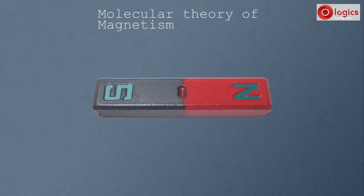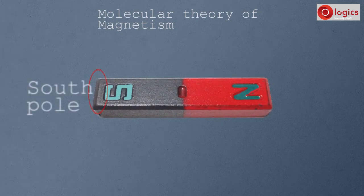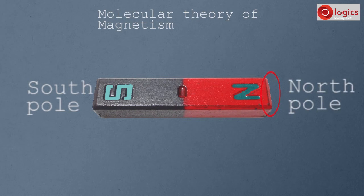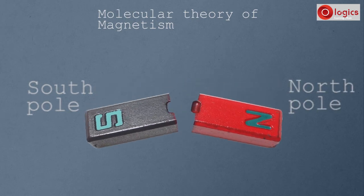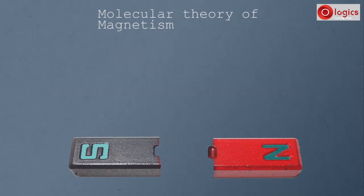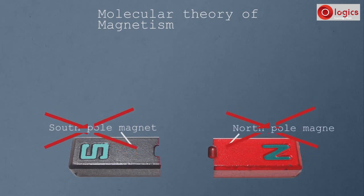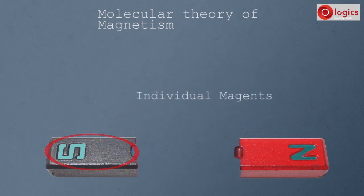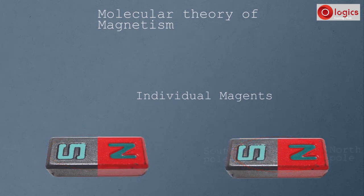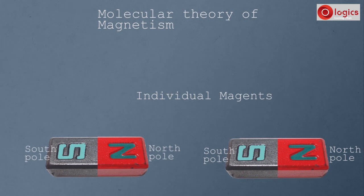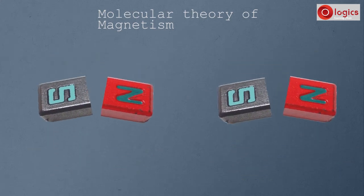Take a magnet — this end is the south pole and this end is the north pole. When you break the magnet into two pieces, you might think one piece is a single south pole magnet and the other a single north pole magnet. That's wrong. Each piece is still a magnet with both north and south poles. Single north pole or single south pole magnets are not formed.